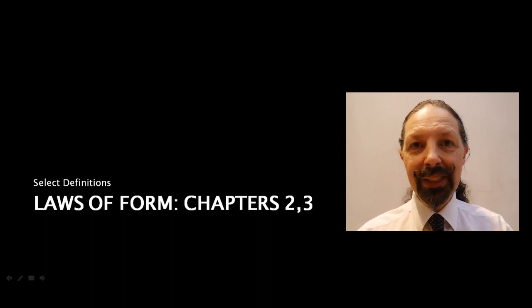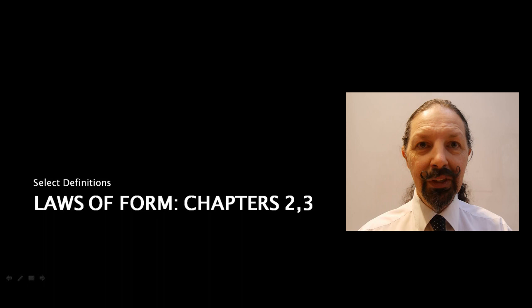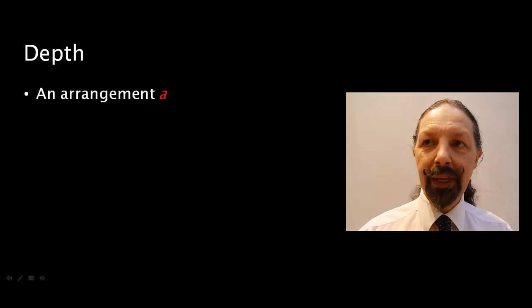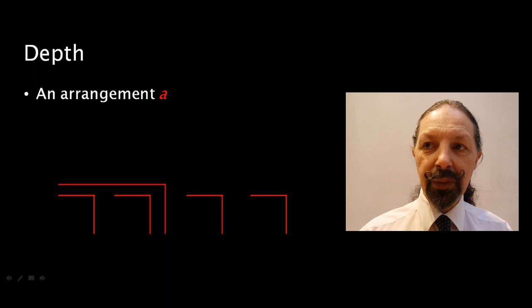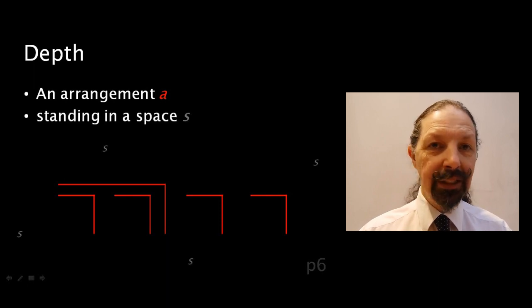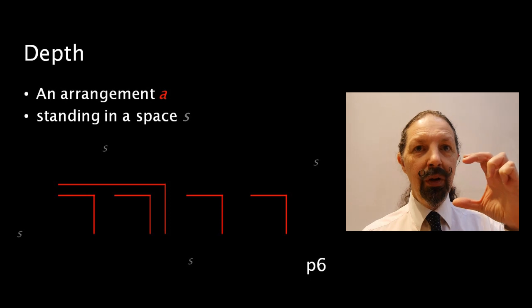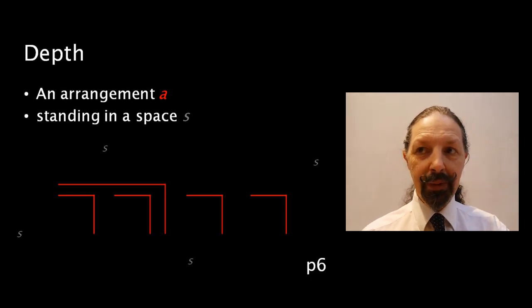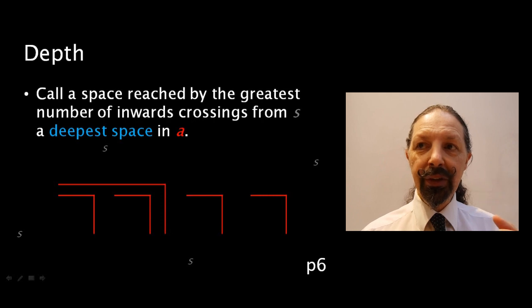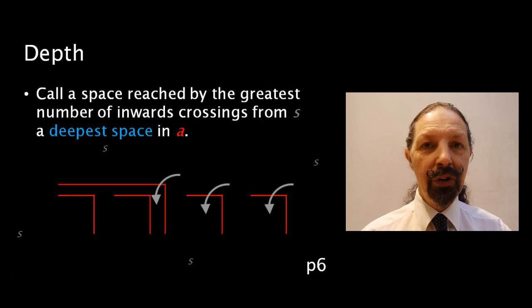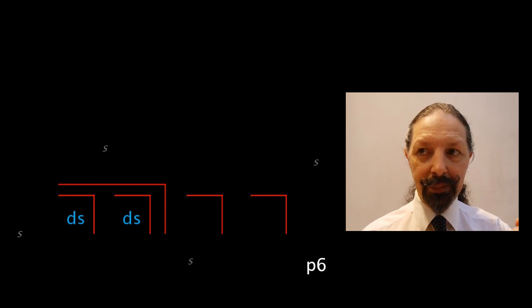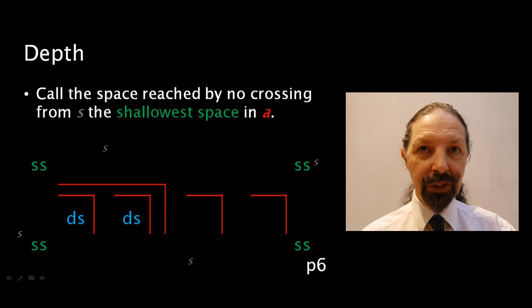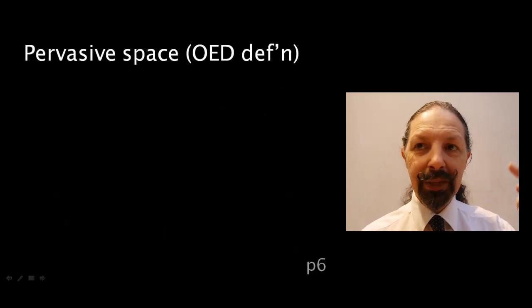Now, let's look at some of the definitions of the terms he uses which allow that to happen. Let's look at depth. You've got an arrangement A, and that's standing in space S, just like a circle was suspended in some kind of space. Call the space reached by the greatest number of inwards crossings the deepest space. So we've crossed one level, now we're going to go another level, and we've reached the deepest space. The outermost space, where you don't have to cross anything, is called the shallowest space. But what about the space in the middle?